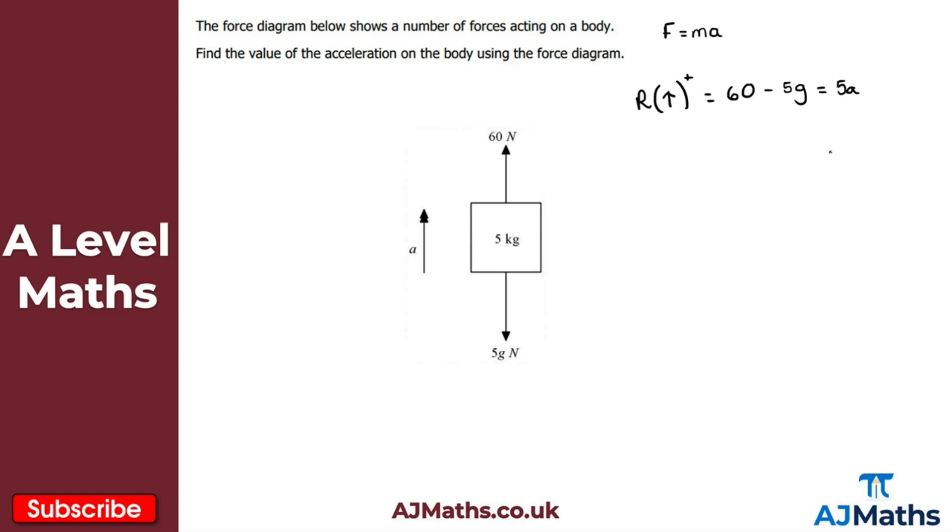So what I need to do now is just solve this here using g equals 9.8. So in that case I'm going to get 60 minus 5 lots of 9.8 is equal to 5a. So let me just put this into my calculator here and see what I get. So 60 minus 5 lots of 9.8 and that gives me 11.